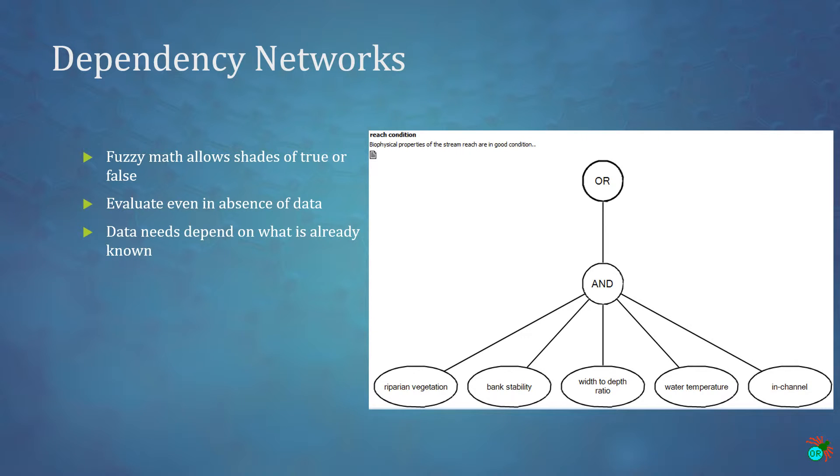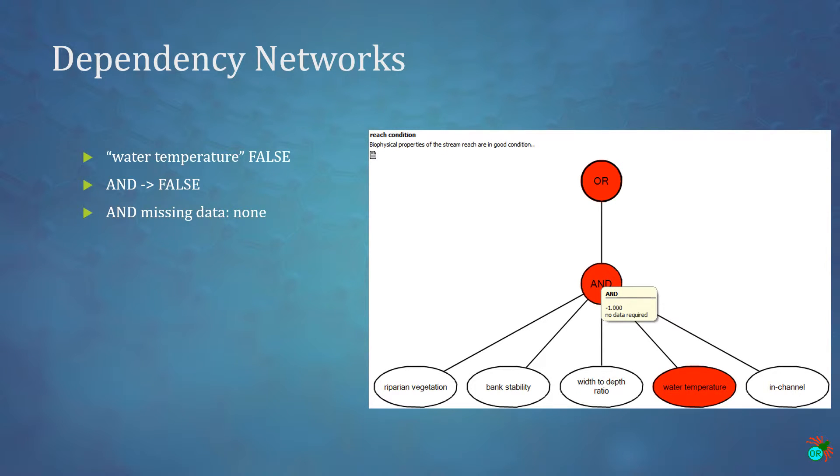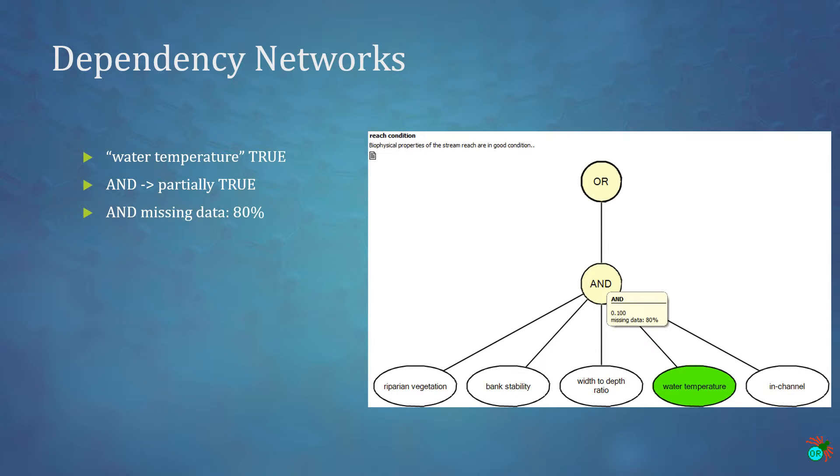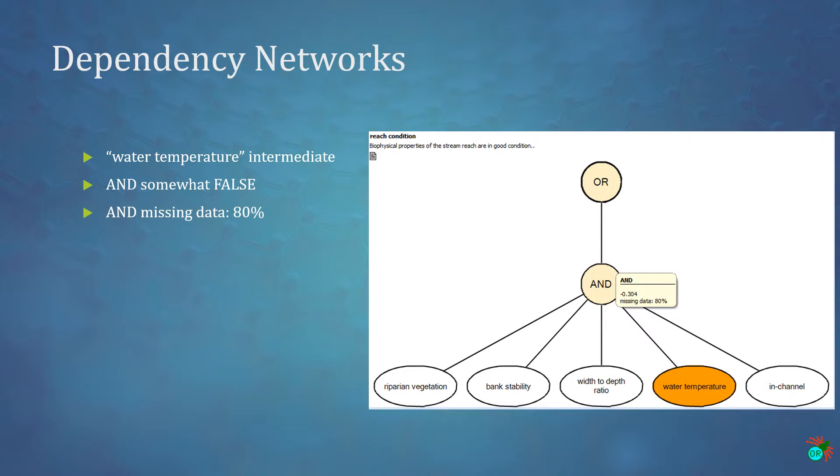A key feature of dependency networks is that data needs are dependent on what data you already have. For example, if we input a temperature that is beyond this acceptable range, making the water temperature topic go false, the AND node will have all the data it needs to do a complete calculation. So when any node feeding the AND node is false, the AND node will be false and will be fully satisfied. However, if we change that temperature to an acceptable value, the water temperature topic now shows fully true. But the AND node now does not have all the data it would like. In fact, it reports that it still lacks 80 percent of the data. This is represented visually by the AND node's faded-out color. And here is what you would see if you have a water temperature that isn't perfectly good, but isn't the worst.